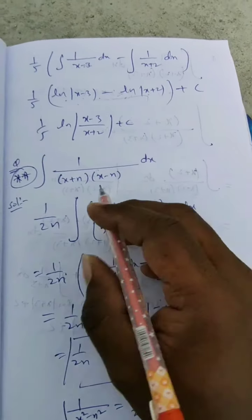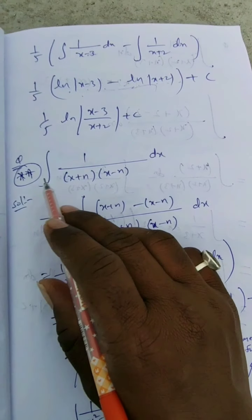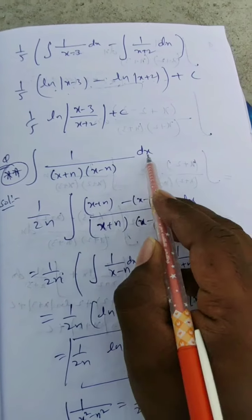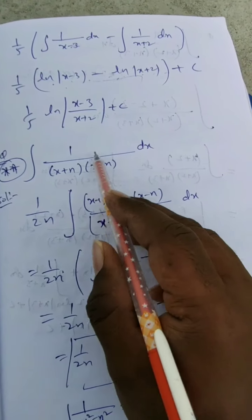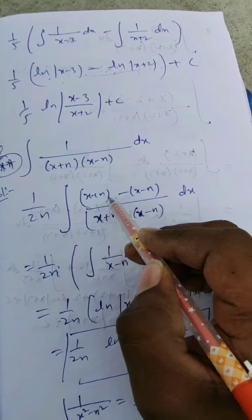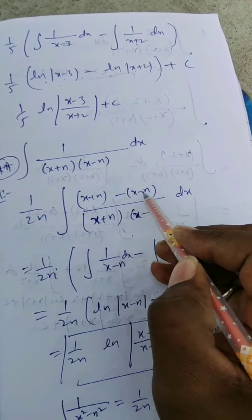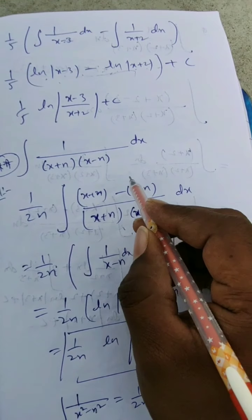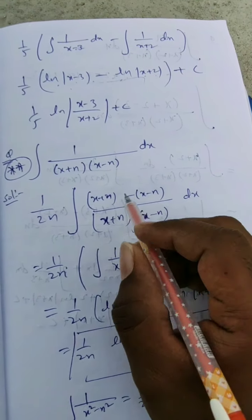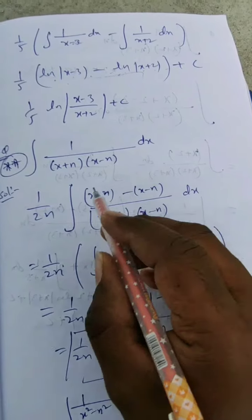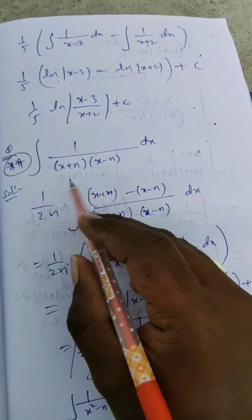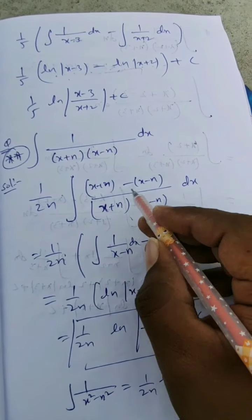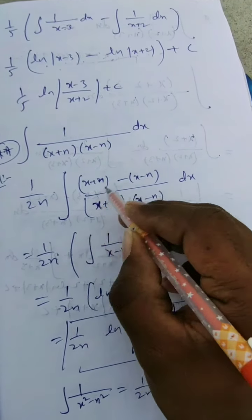This next one is important and we can consider it as a formula. Integration of 1 by x plus n into x minus n dx. The difference on top: x plus n minus x minus n gives 2n. So to balance I divide by 2n, giving 1 by 2n times the integral with x plus n into x minus n in the denominator.